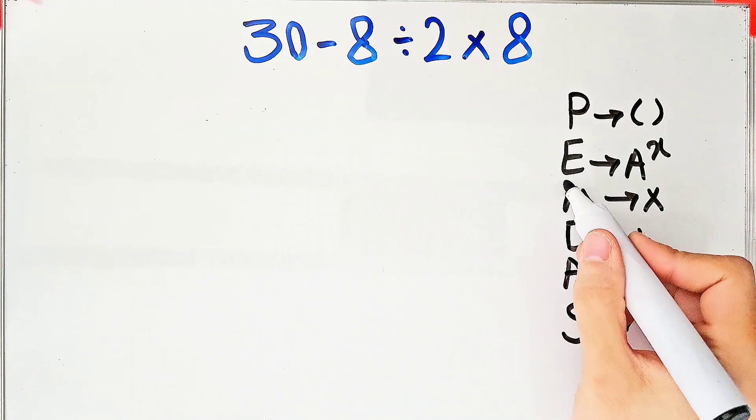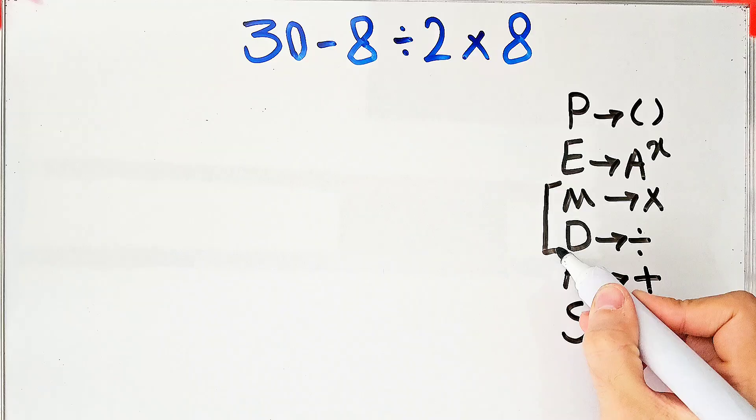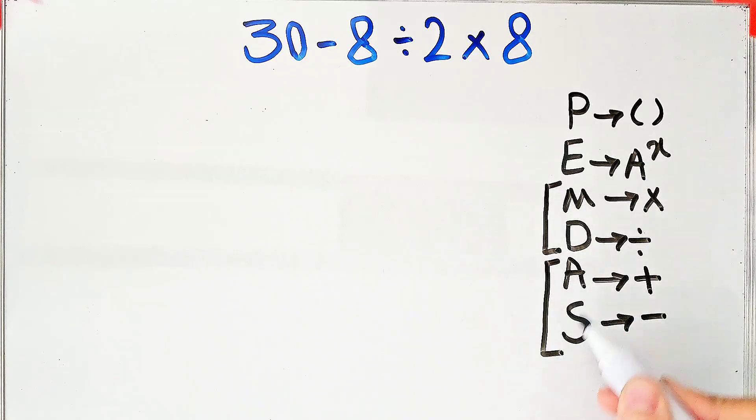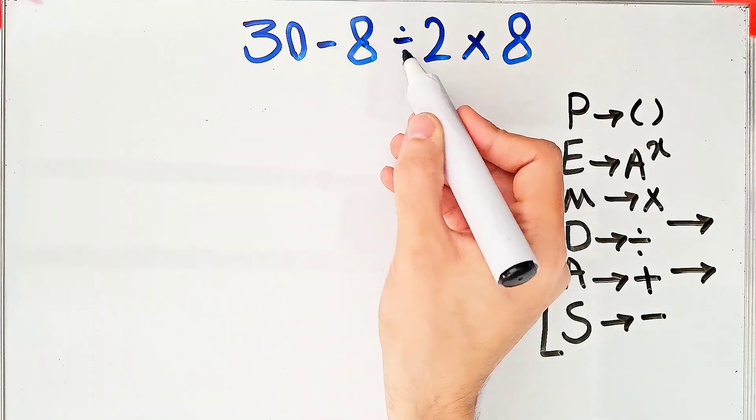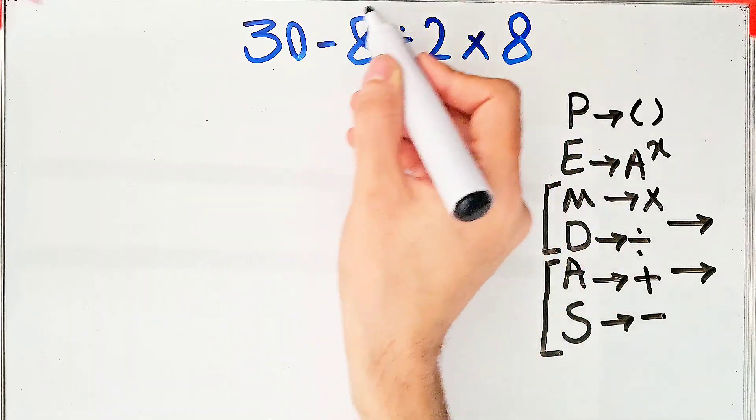Multiplication and division have the same level of priority. Also, addition and subtraction have the same priority, and when we have both in an expression we start from the left and simplify the question. In this question we have subtraction, division, and multiplication. First we simplify 8 divided by 2 times 8.